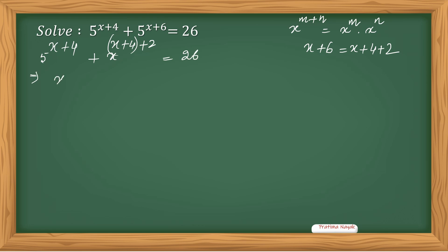So this is same as 5 raised to the power x plus 4 plus 5 raised to the power x plus 4 times 5 raised to the power 2, equals 26.